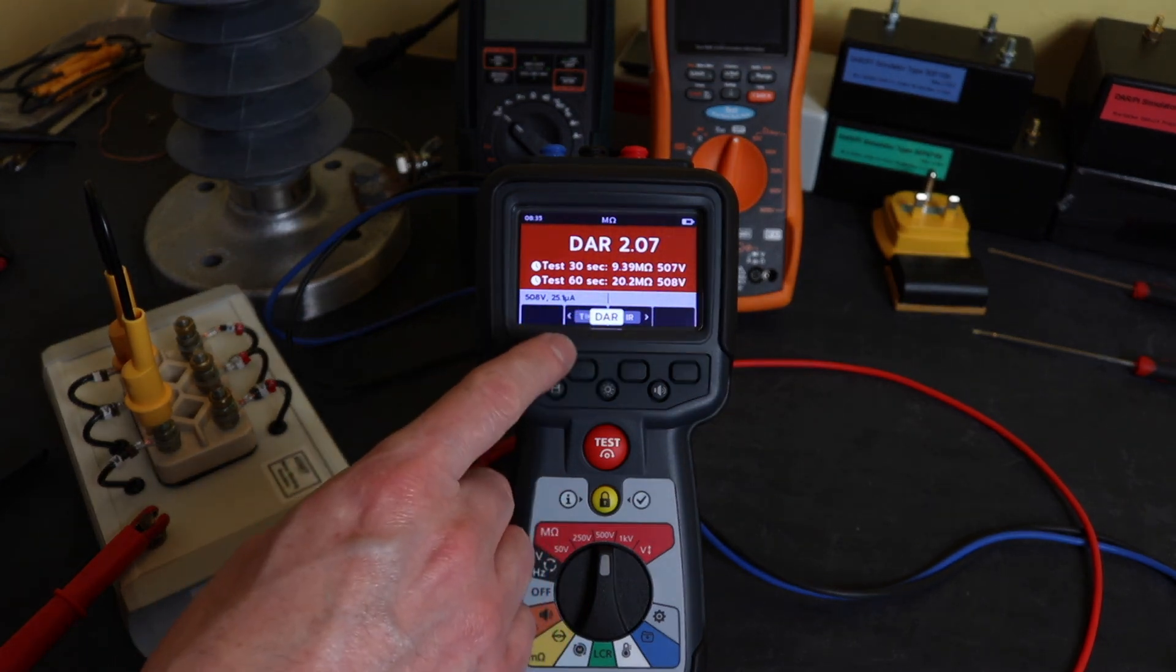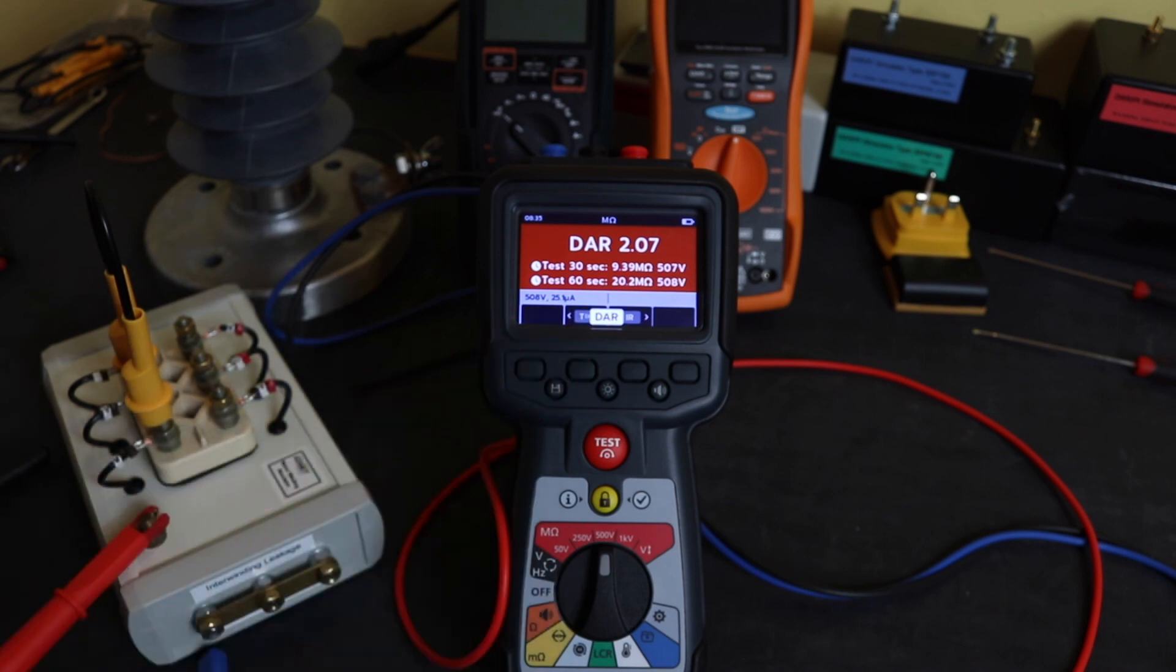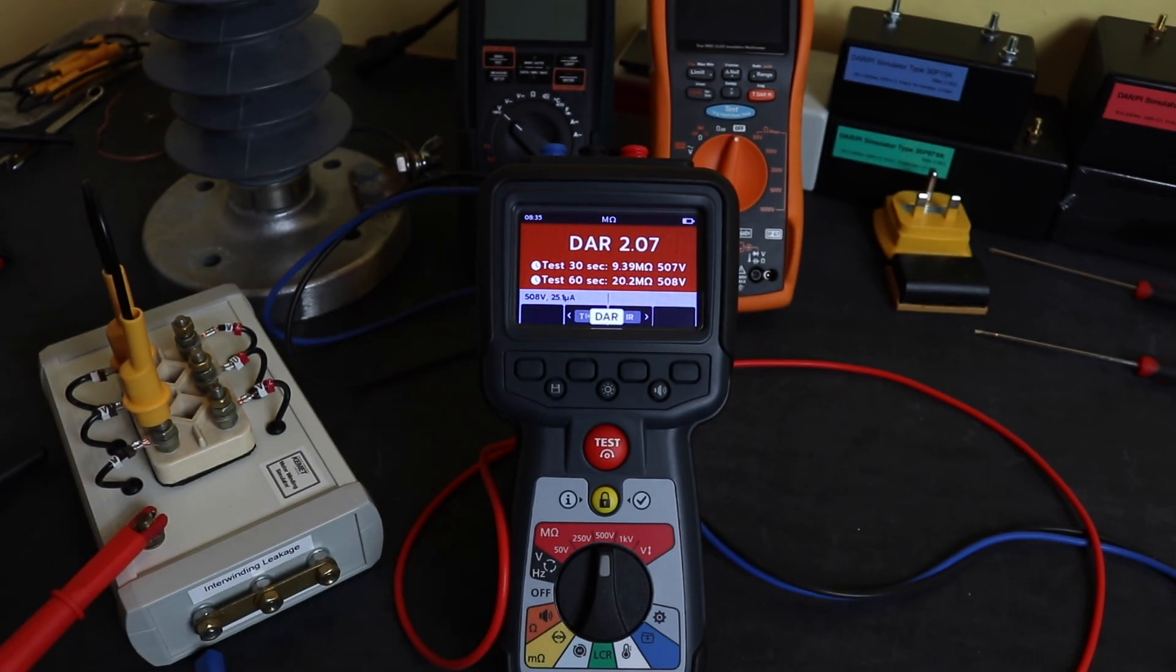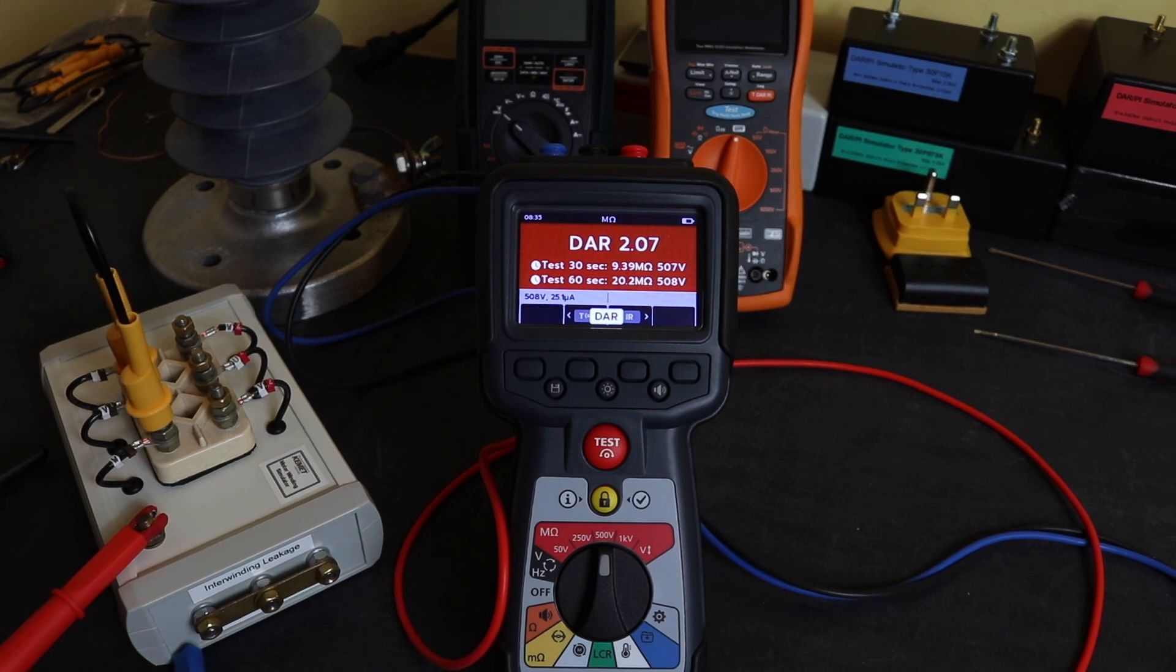That test is completed and you can see now my die ratio has gone up and my final reading which was 11 megaohms before is now 20 megaohms, nearly double the previous reading. That will be the true insulation value of this first phase going down to earth.